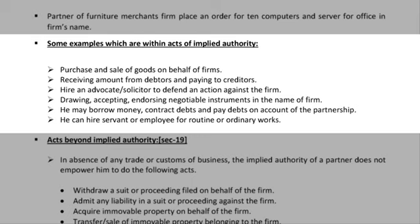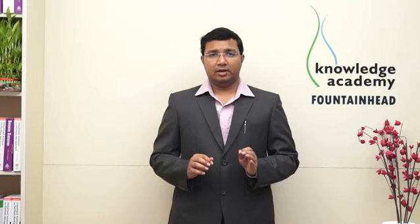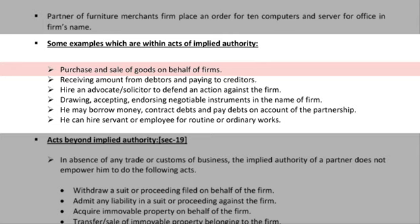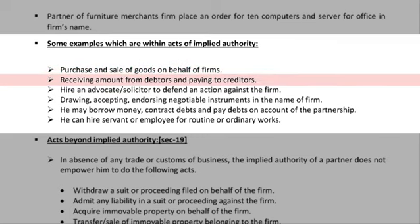Let us see some examples of acts which are within implied authority. Please remember these points for MCQs. The first is purchasing and selling goods. The second is receiving amounts from debtors and paying creditors.